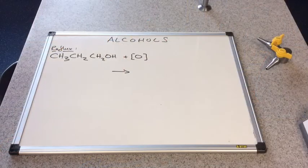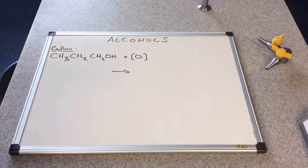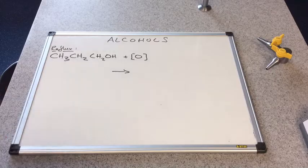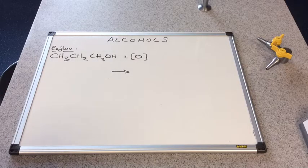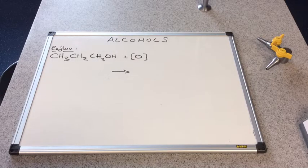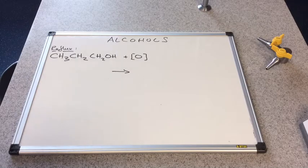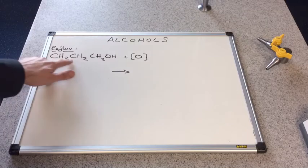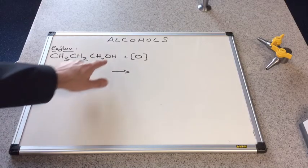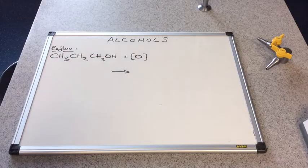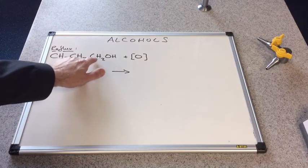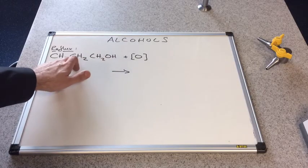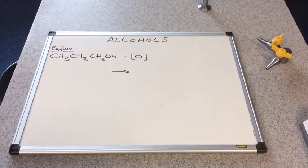We'll just quickly have a look at the equations that accompany the reflux and distillation processes. Remember this is only relevant for primary alcohols, because secondary can only be oxidized once anyway, and tertiaries can't be oxidized at all. We've got a primary alcohol here - we've got one, two, three carbons, so that's prop-. The OH is on this carbon here, so that's propan-1-ol. The carbon with the OH on, the hydroxyl carbon, is only bonded directly to this carbon here, so that's why it's primary.